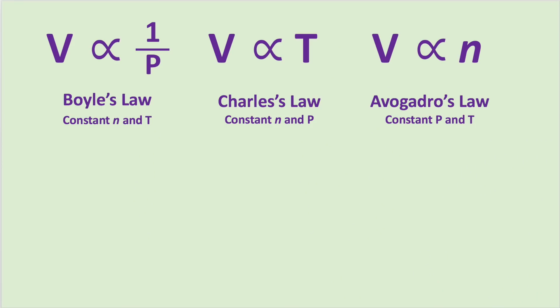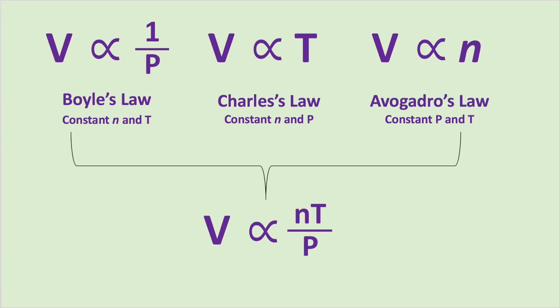Last lesson we covered a number of simple gas laws such as Boyle's law, Charles's law, and Avogadro's law. We can combine these equations into a single expression that shows the relationship of a single quantity, like volume, to several other variables such as pressure, temperature, and moles. Once we combine, we have volume is directly proportional to the number of moles of a gas and to temperature, but is indirectly proportional to the pressure of the gas.